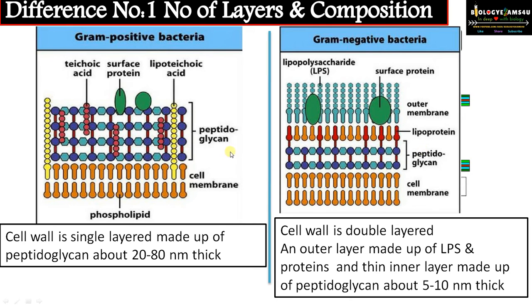In the case of gram positive bacteria the periplasmic space is very small, whereas in the case of gram negative bacteria there is a large periplasmic space.